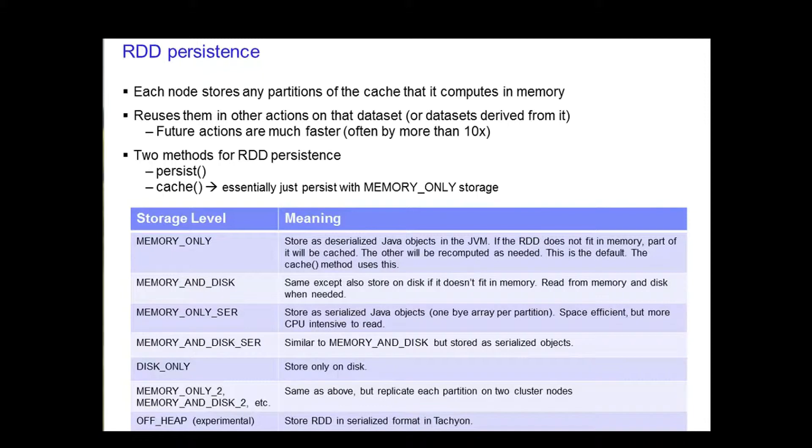The first time an RDD is persisted, it is kept in memory on the node. Caching is fault tolerant because if any partition is lost, it will automatically be recomputed using the transformations that originally created it.